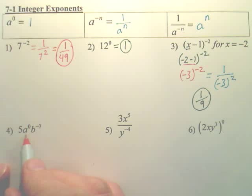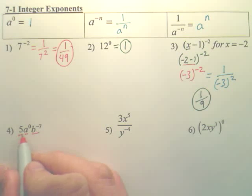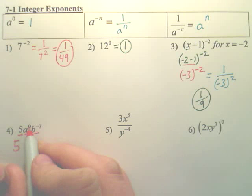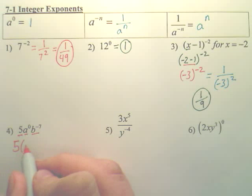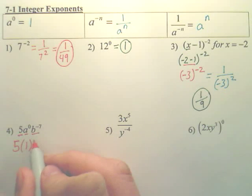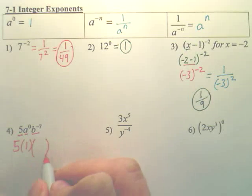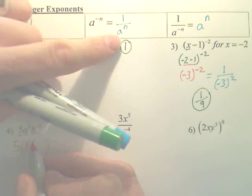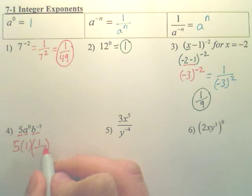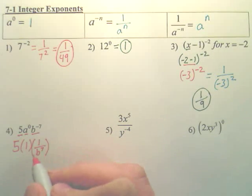Okay, let's look at number 4 here. Let's separate this into three different pieces. First of all, 5, well that's just simply 5. Alright, a to the 0, well a to the 0 is, anything to the 0 is 1. So this piece right here is just going to be 1. And then the last piece, b to the negative 7th, according to this property, negative powers flip. So that becomes 1 over b to the 7th.